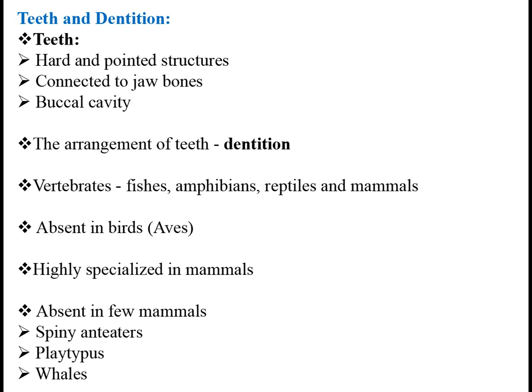We all know the importance of teeth. It is required to consume food. Without teeth, animals cannot survive. Teeth are present in all higher animals such as vertebrates. The hard and usually pointed structures which are connected to jaw bones in the buccal cavity or mouth cavity of vertebrates are known as teeth. The arrangement of teeth in a vertebrate is termed dentition.